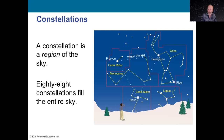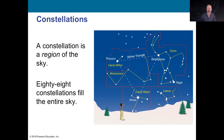Betelgeuse is the most likely star to explode in your lifetime, so it's good to pay attention to it. Here in the summer, we won't see Orion — it's a winter constellation. We have what's called the Winter Triangle: Sirius, which is the brightest star in our sky at eight light years away; Procyon in Canis Minor, the little dog; Canis Major, the big dog; and Betelgeuse in Orion. We see these in wintertime, not so much in summer.